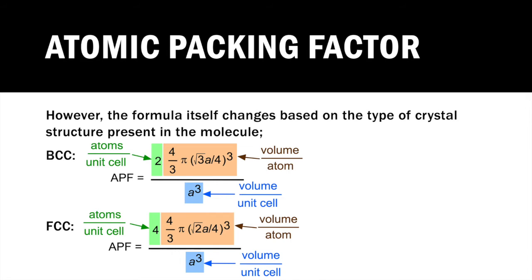And the same thing happens for the face-centered cubic structure. The amount of atoms per unit cell goes up to 4 now, so it could fit 4 atoms per unit cell, and the actual area changes from the square root of 3 over 4 to the square root of 2 over 4.